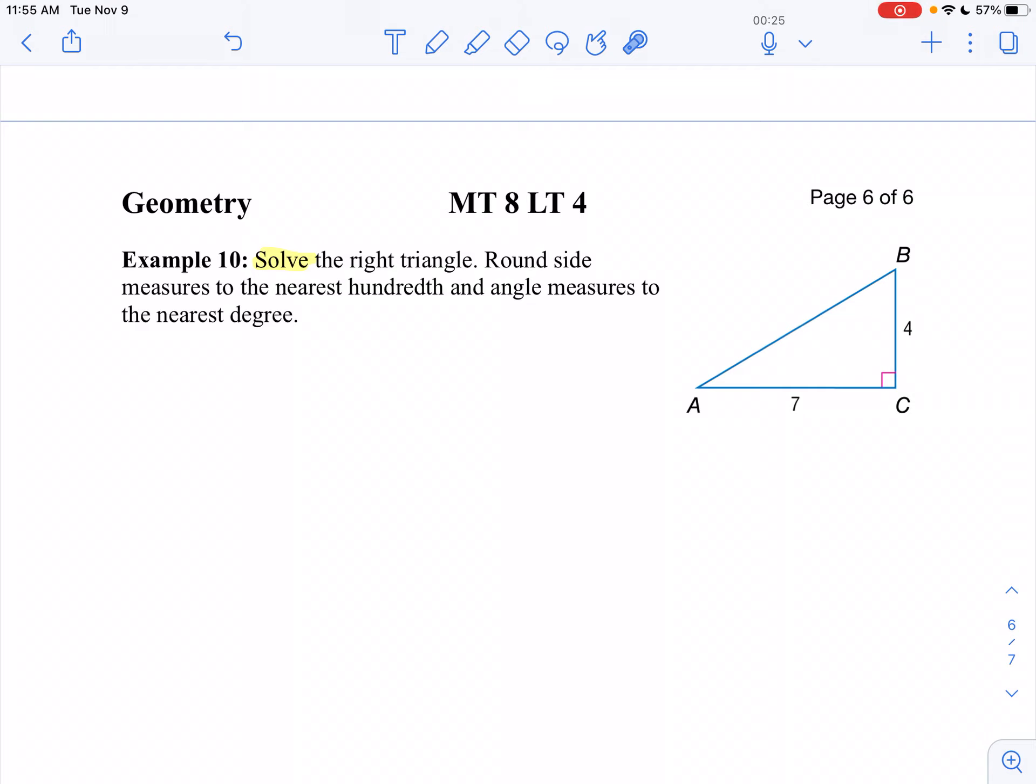So first off, I've got two legs. I think the easiest way to solve for C is to use Pythagorean theorem because you've got two sides. C squared equals A squared plus B squared. So C squared equals seven squared plus four squared.